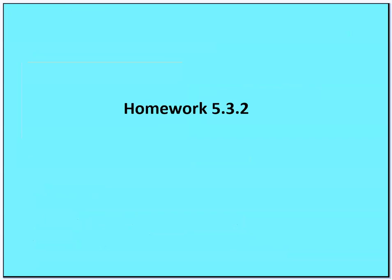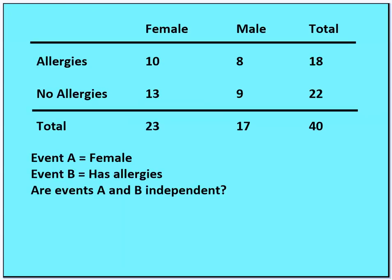This brings us to homework 5.3.2: we look at allergies versus no allergies by gender and ask whether events A and B are independent. Please take a moment to write this down.